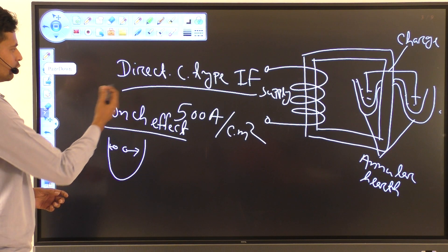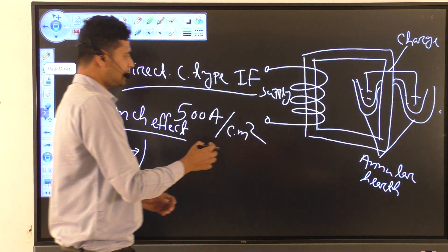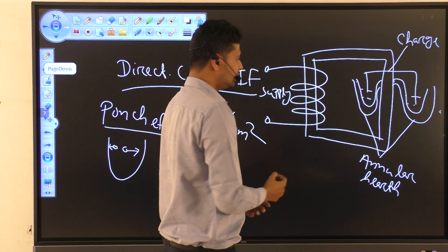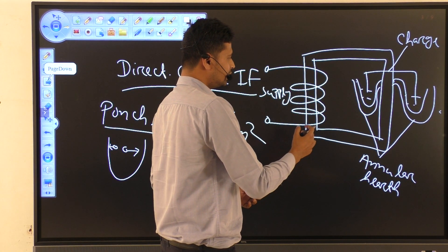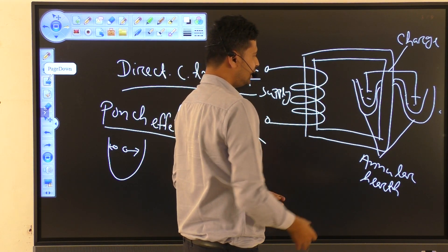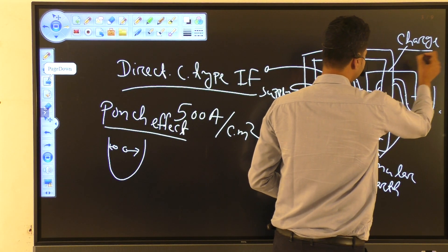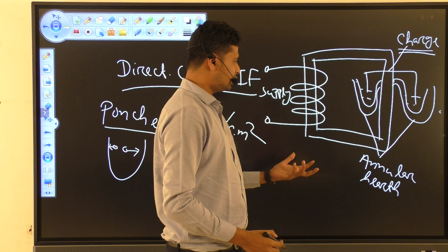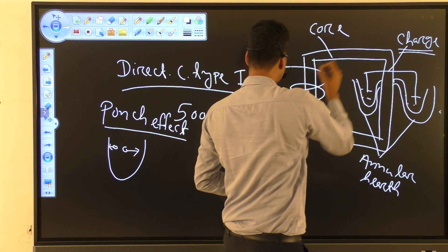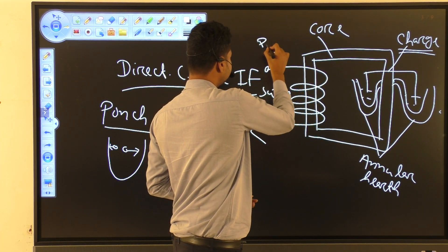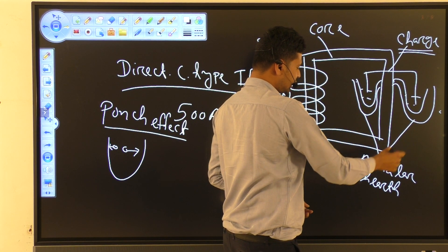In the direct core type induction furnace, it behaves like a transformer. When the induced supply is provided to the primary, it induces current in the secondary. This current is an eddy current which causes heating of the charge — the metal pieces to be heated. Here is the core, this is the primary winding, and the secondary winding is a single turn used as an annular hearth.